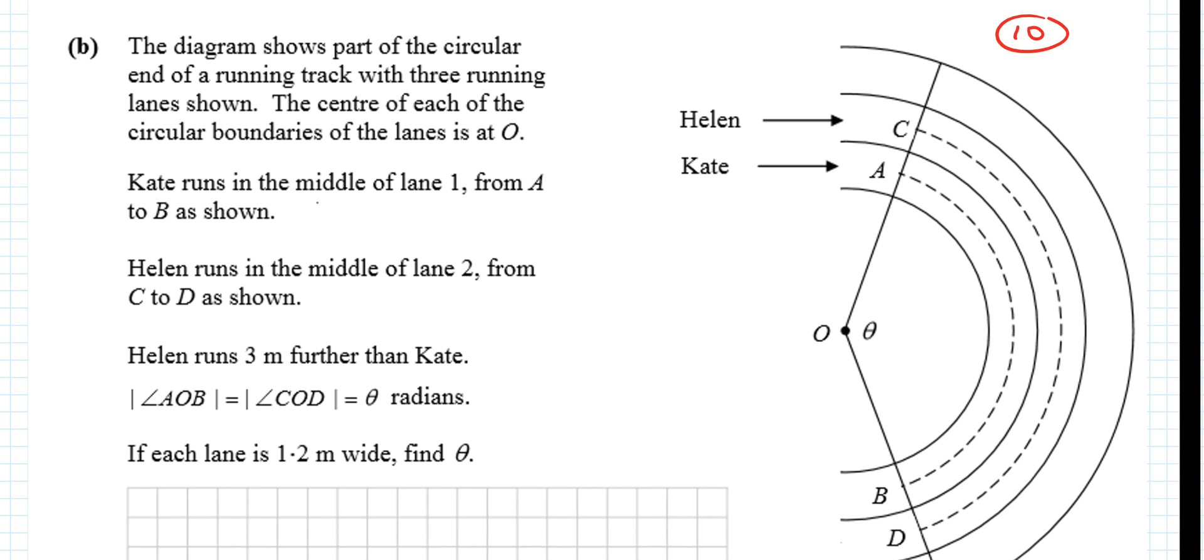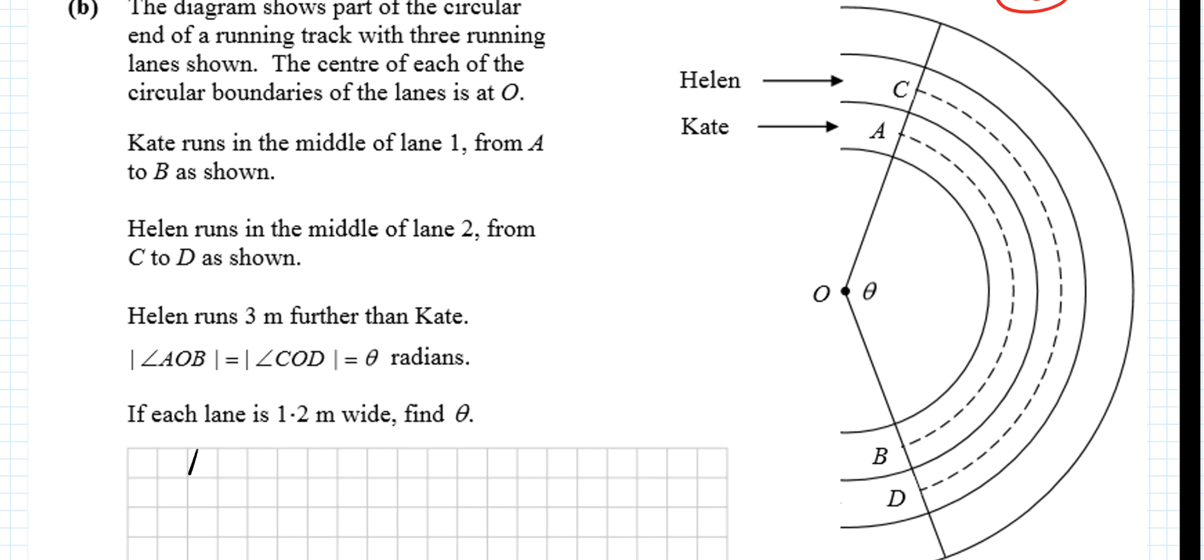Kate runs in the middle of lane 1 from A to B as shown. A to B is not equal to C to D. It's very clear for us to see that C to D is a longer distance to run. So the distance from A to B is not the same as the distance from C to D.